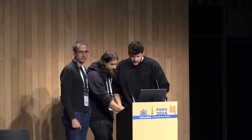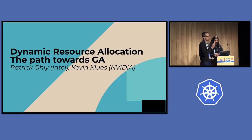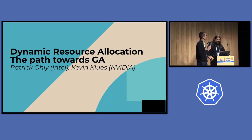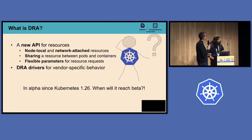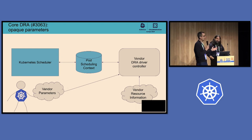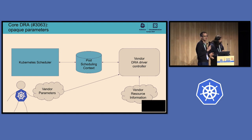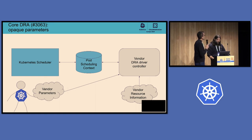We need feedback from end users here. DRA in Kubernetes doesn't manage any hardware — it's all delegated to drivers. Without a driver, it doesn't do anything. The usage model we envisioned is that the vendor also defines the parameters that go with the hardware.